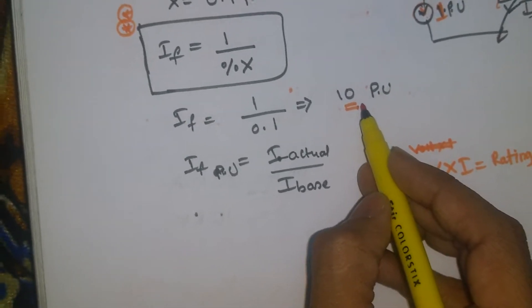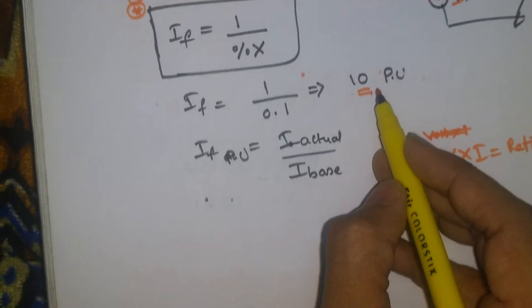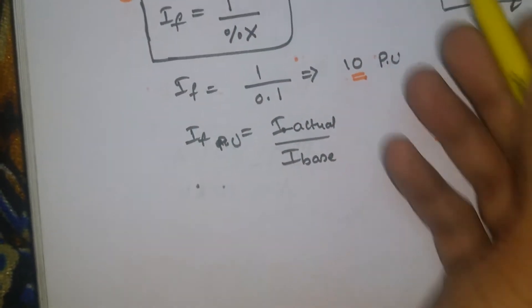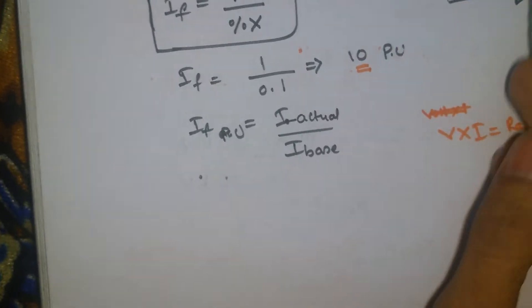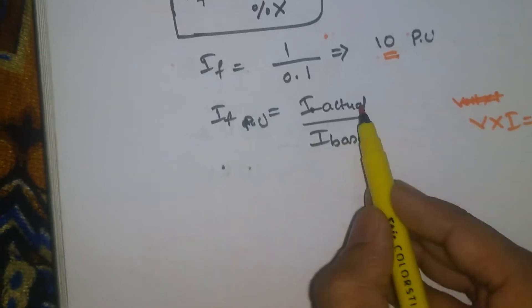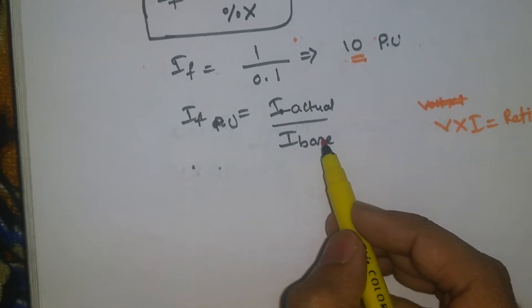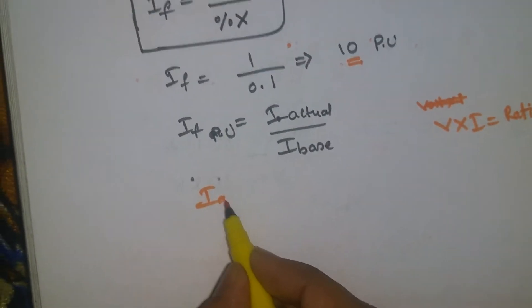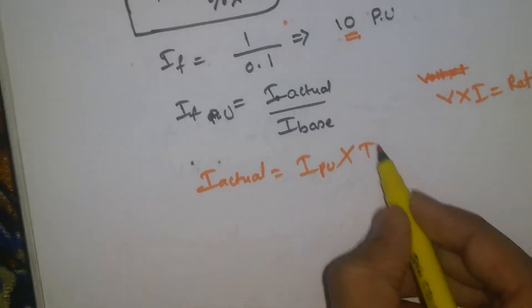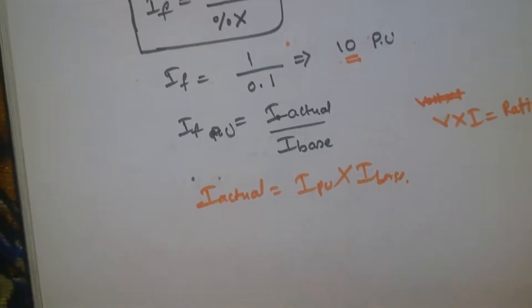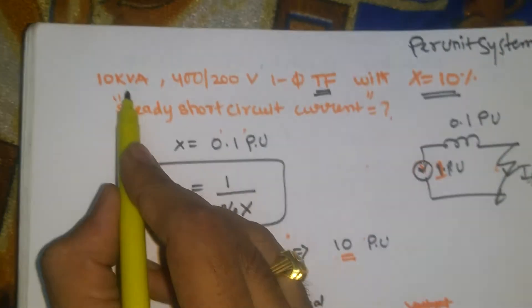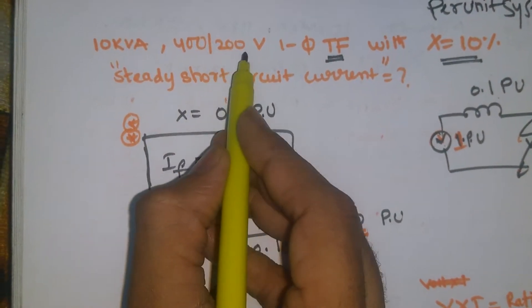We need to calculate the actual fault current or steady short circuit current. Per unit system is actual by base, so we want to find out the actual, but we have a per unit value. We need to find the base value. So where to find this base value? We have a rating, that is 10 kVA, 400 by 200 volts.